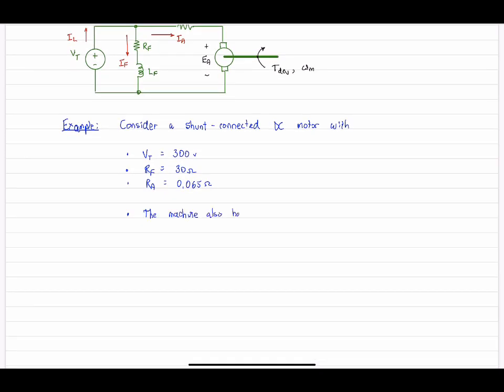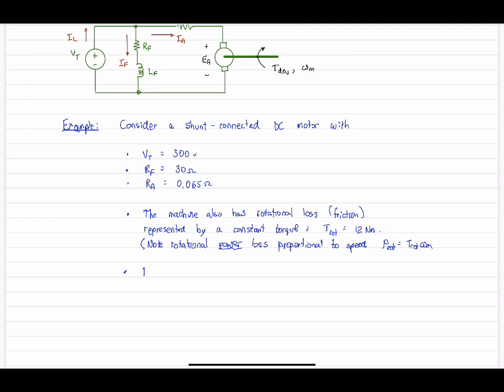The machine also has rotational losses in the form of friction, but it could also include windage. We're going to represent this loss as a constant torque of 12 newton meters. That is independent of speed. But where we see speed enter the situation is when we talk about power, which is the constant rotational loss times speed. So as you might expect, the power loss is proportional to speed. Speed it up, we're going to lose more power.